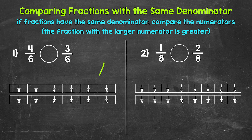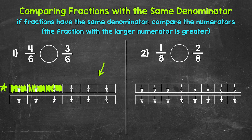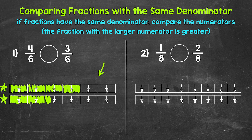We have two fraction strips showing sixths down here. So the whole strips — the whole rectangles — are divided into six equal parts. Let's shade four-sixths and three-sixths. We'll start with four-sixths right here: one-sixth, two-sixths, three-sixths, and four-sixths. Now for three-sixths right here. Which fraction strip has more shaded in? Which fraction is greater? Well, four-sixths.